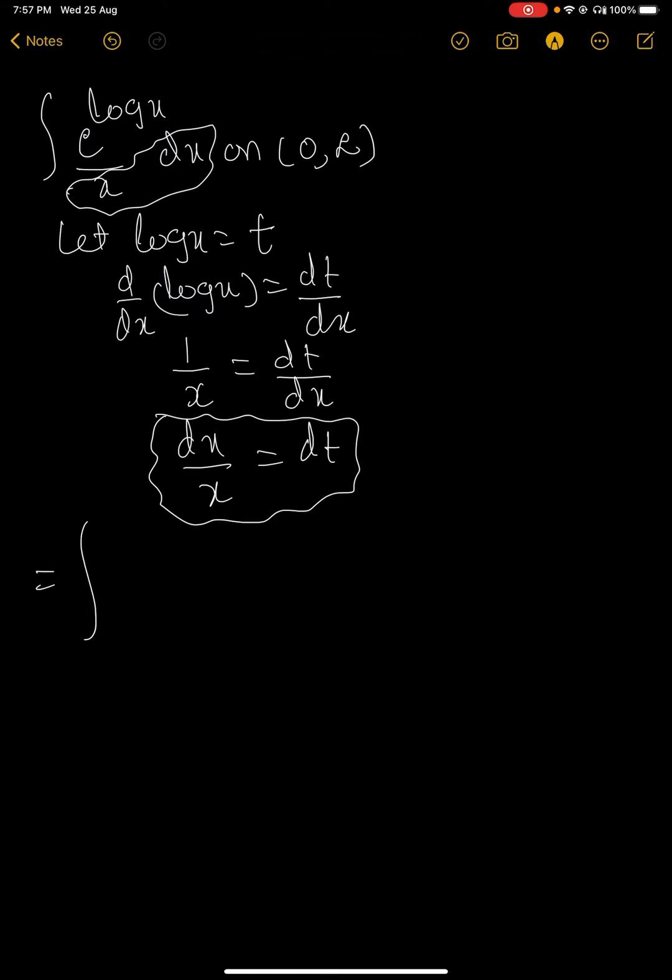Now you substitute in the problem: e power t, and dx by x is dt.